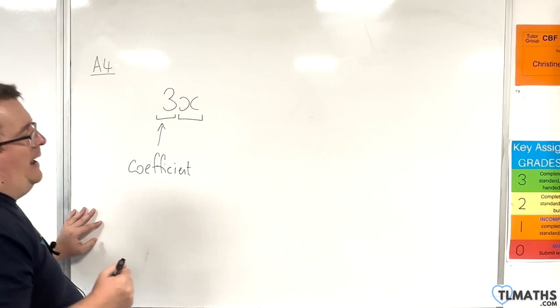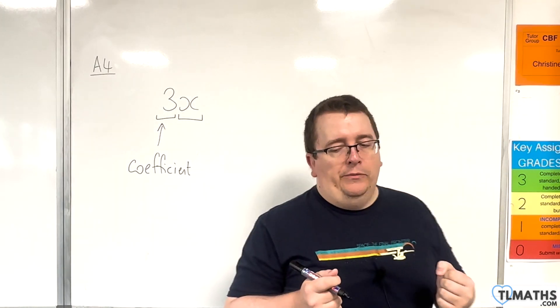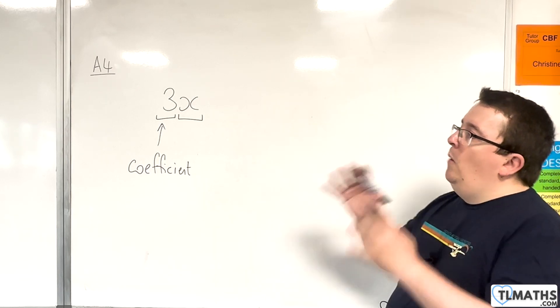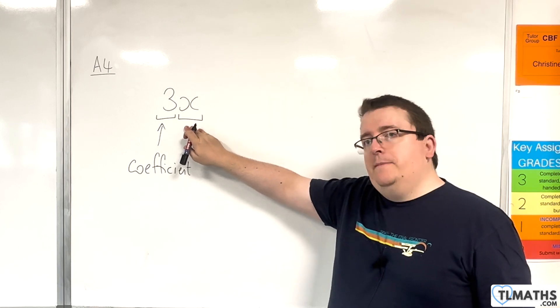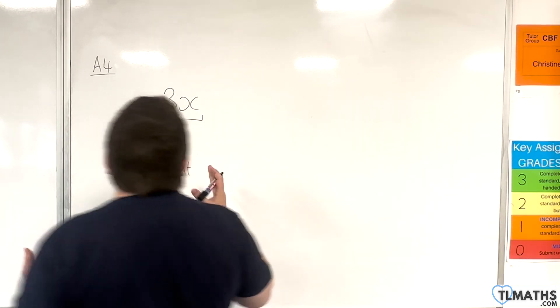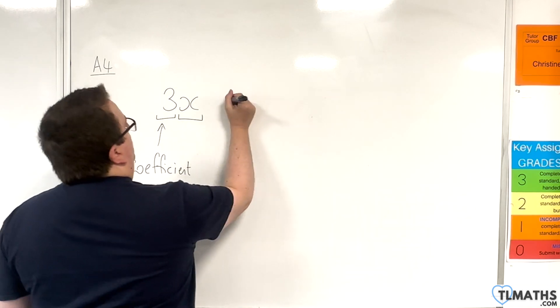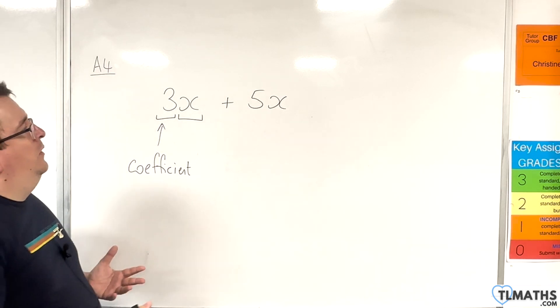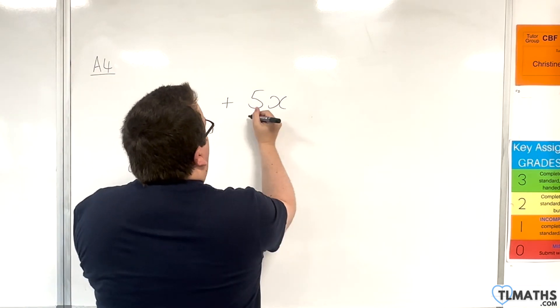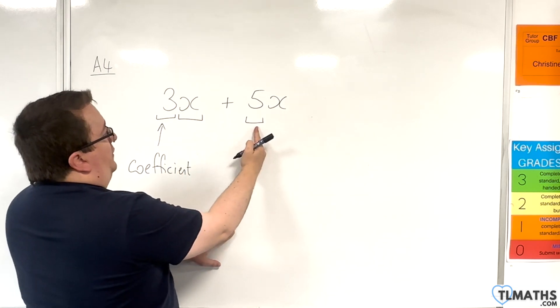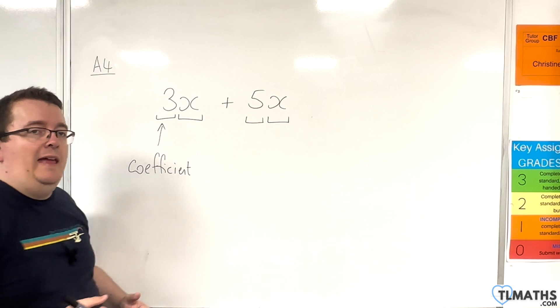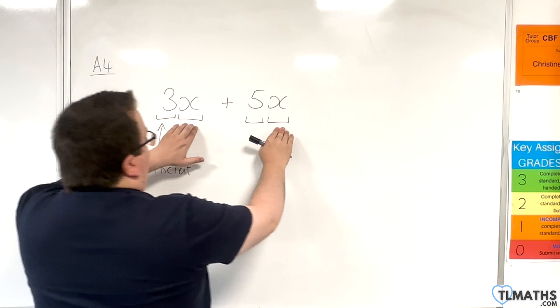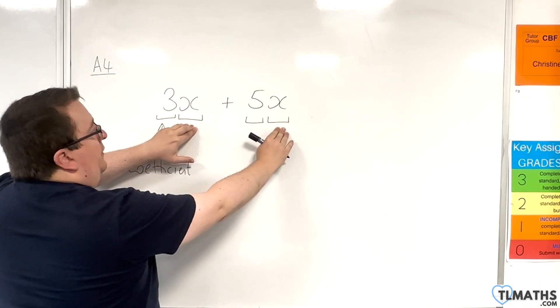And what's key about collecting like terms is that what you need to be able to do is spot when the algebra bit is precisely the same. So let's take a look at, for example, adding on 5x. So now we have another term. If we split this up into its two pieces, we find that we have 5 as the coefficient and then we've got x as the algebra bit, the letters. And the letter bit, the algebra bit, is precisely the same.